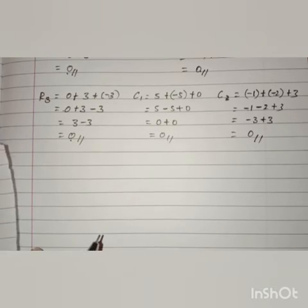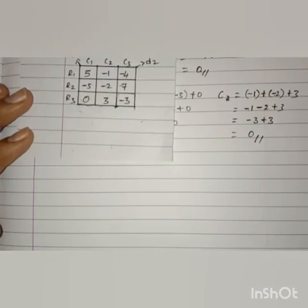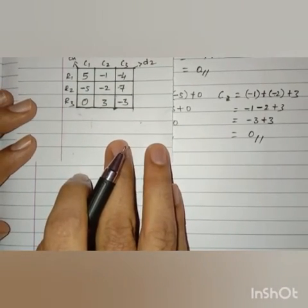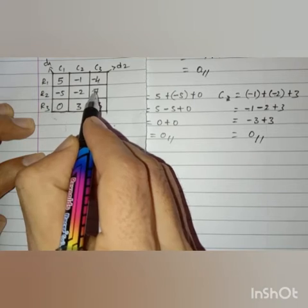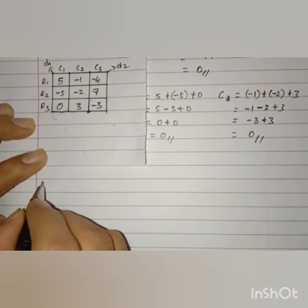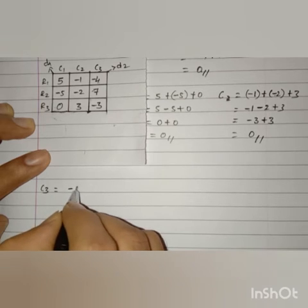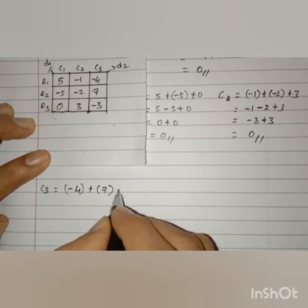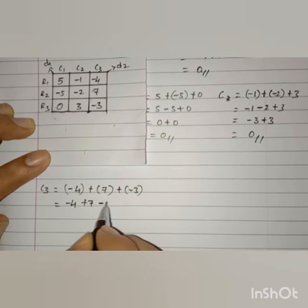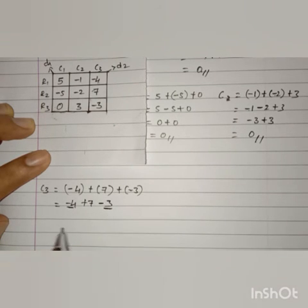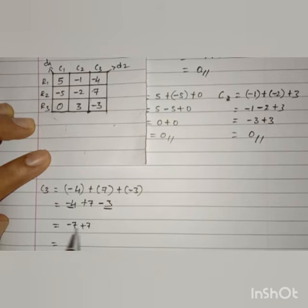Let us find out column 3. In column 3 we have minus 4, plus 7, and minus 3. So minus 4 plus 7 plus minus 3. Minus 4 and minus 3 give minus 7, plus 7 as it is. So minus 7 plus 7 equals 0. Column 3 also gives 0.